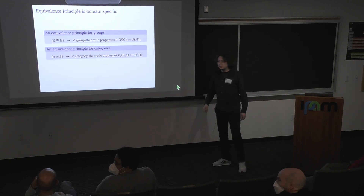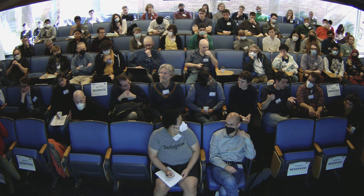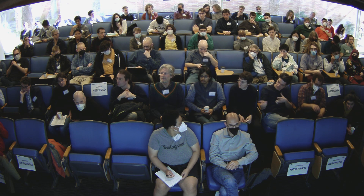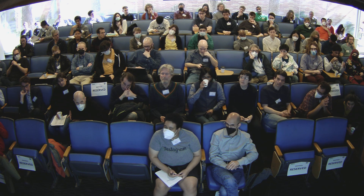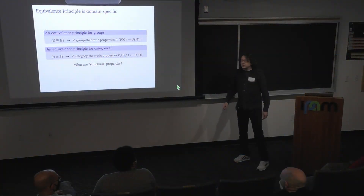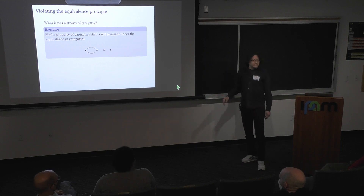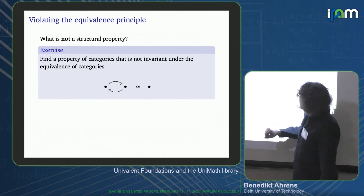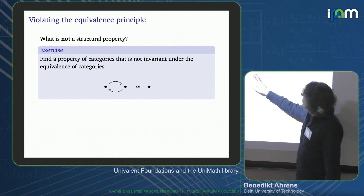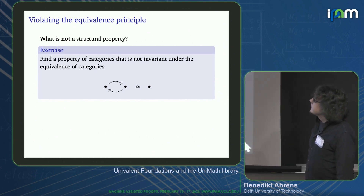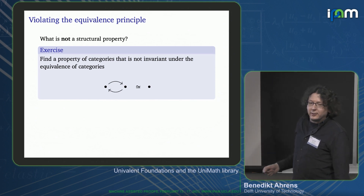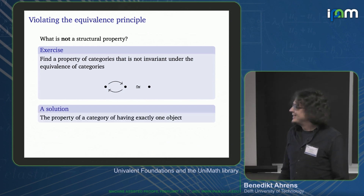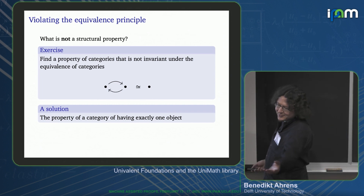It's more about finding a good balance: if you take too many properties, then your notion of sameness is too strong; if you take too few, it might be the wrong notion. One can ask what are structural properties and what are not. Here I have drawn an equivalence of categories — these two categories are equivalent, but not all properties are invariant under this equivalence. Does anybody know a non-invariant property? The number of objects. Fantastic — that's my solution and yours too.